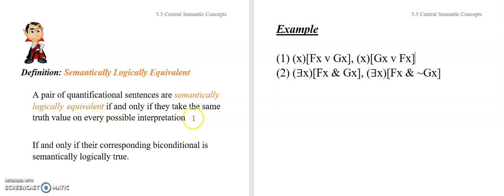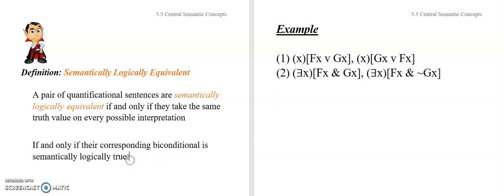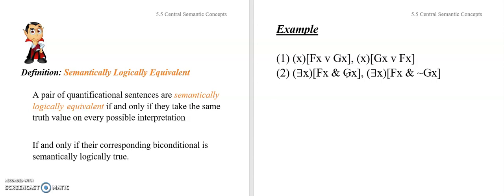If the sentences were semantically logically equivalent, they would have to take the same truth value on all interpretations. So as long as you've got one interpretation according to which they take different truth values, you know they're not semantically logically equivalent. Their corresponding biconditional would have to be a tautology — so if you find one interpretation where that biconditional is false, you've shown they are not equivalent. Using two objects, prove the second pair is not semantically logically equivalent. Pause now.